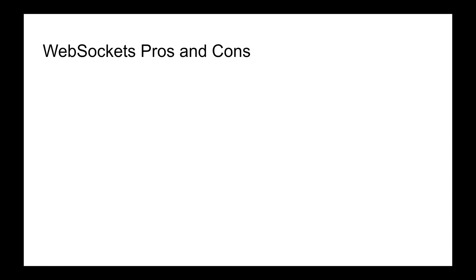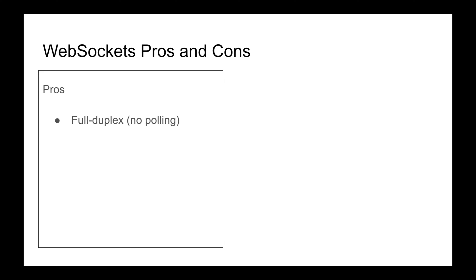Now we need to learn about the pros and cons of this technology, because nothing is perfect — it's always pros and cons. What's good about this? The first pro is it's full-duplex. So if you're building an application that requires the server to send you updates, you do not need to do polling. You don't have to ask the server 'do you have this?' over and over. With WebSockets, the server can send you information and the client can send information, and you can build really cool apps — like gaming — with this technology.